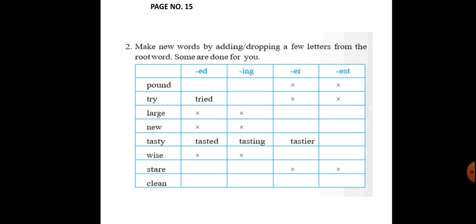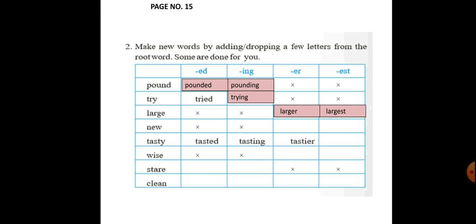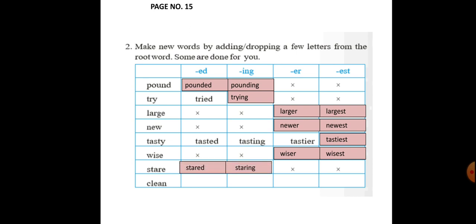Another word building exercise: make new words by adding or dropping a few letters from the root word. Some are done for you and the rest you have to complete. The blank places must be filled — for example: pounded, pounding; trying; large, larger, largest; new, newer, newest; tasty, tasting, tastier, tastiest; wise, wiser, wisest; stare, stared, staring; clean, cleaned, cleaning, cleaner, cleanest. There are two words which have all four forms: 'tasty' and 'clean.'